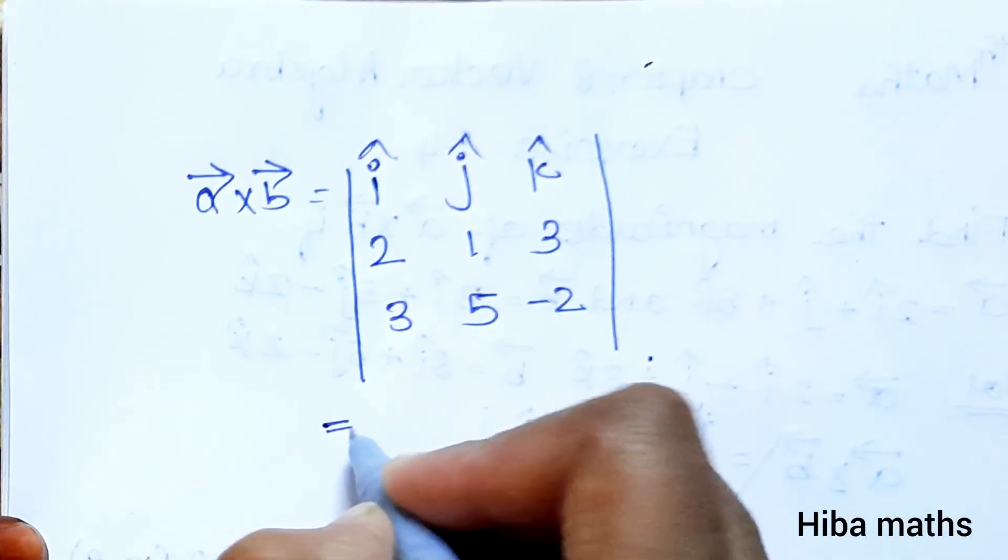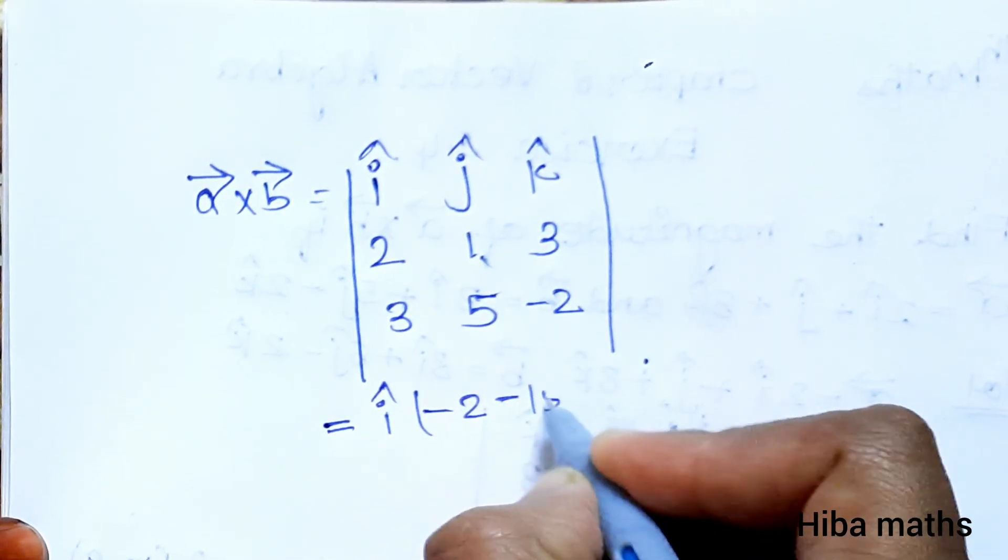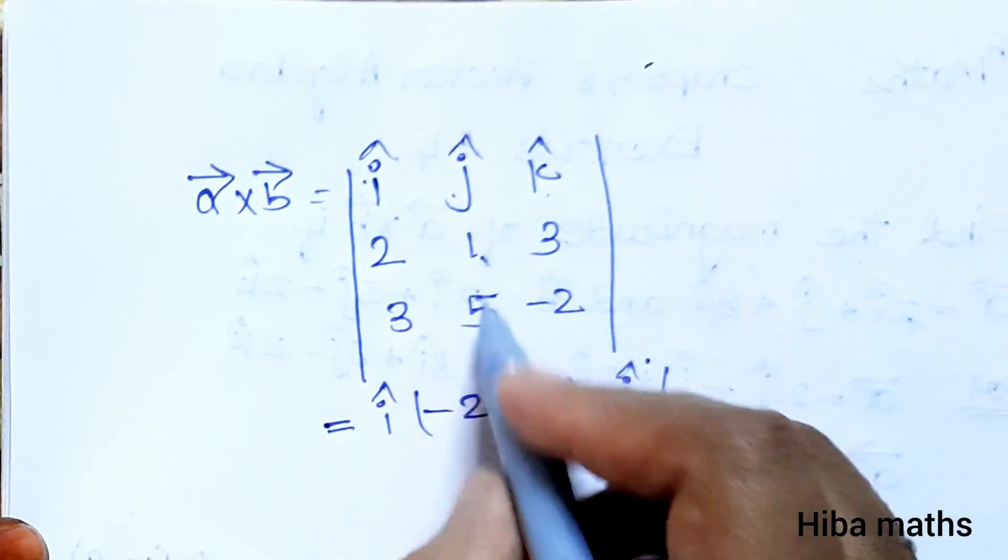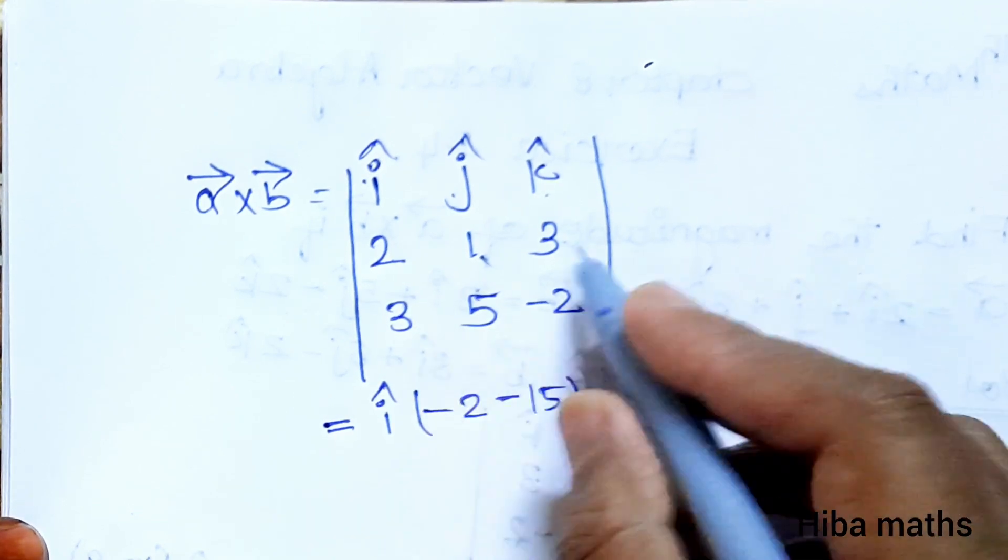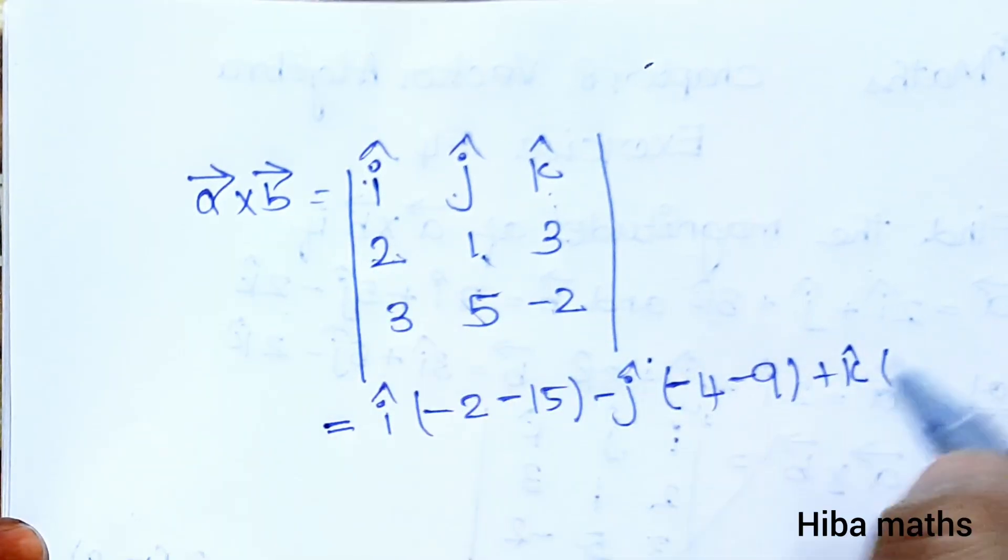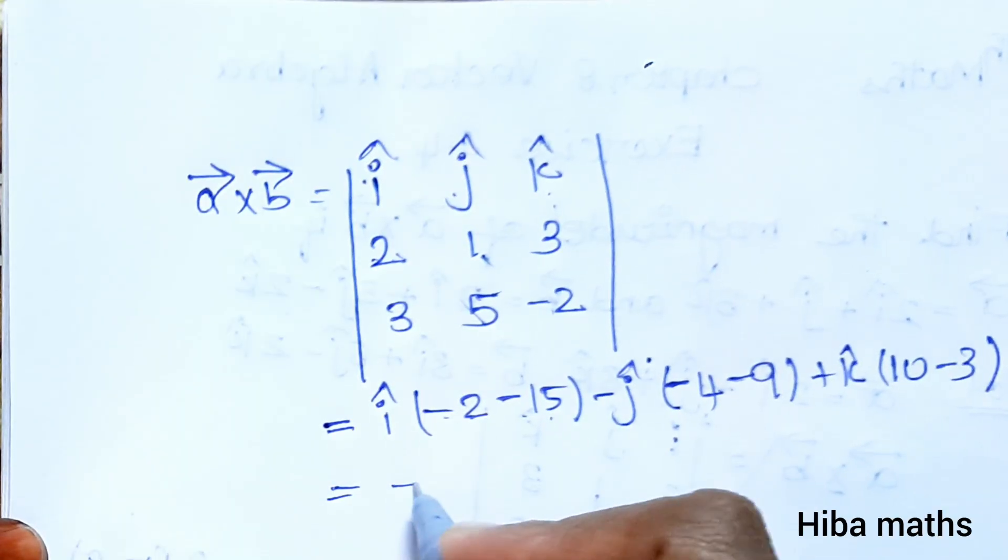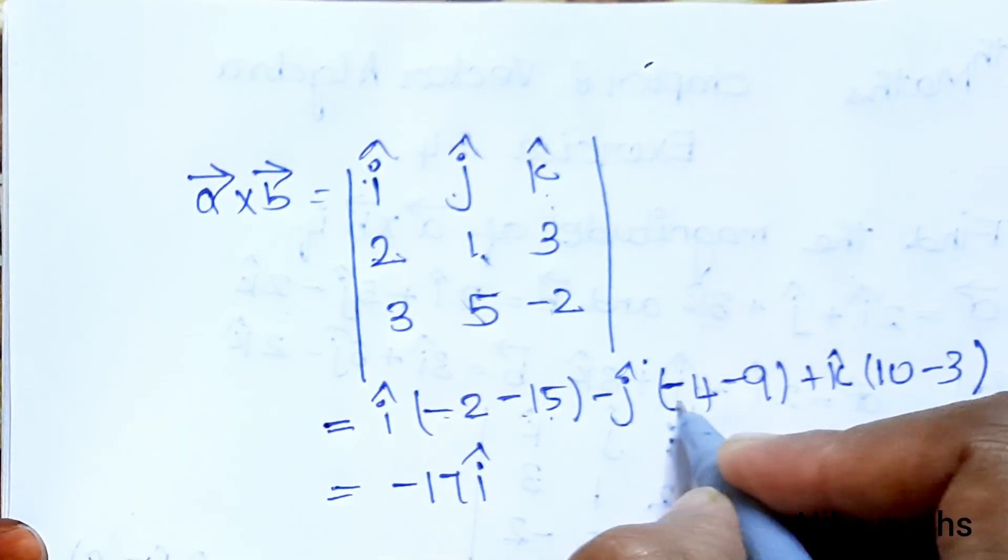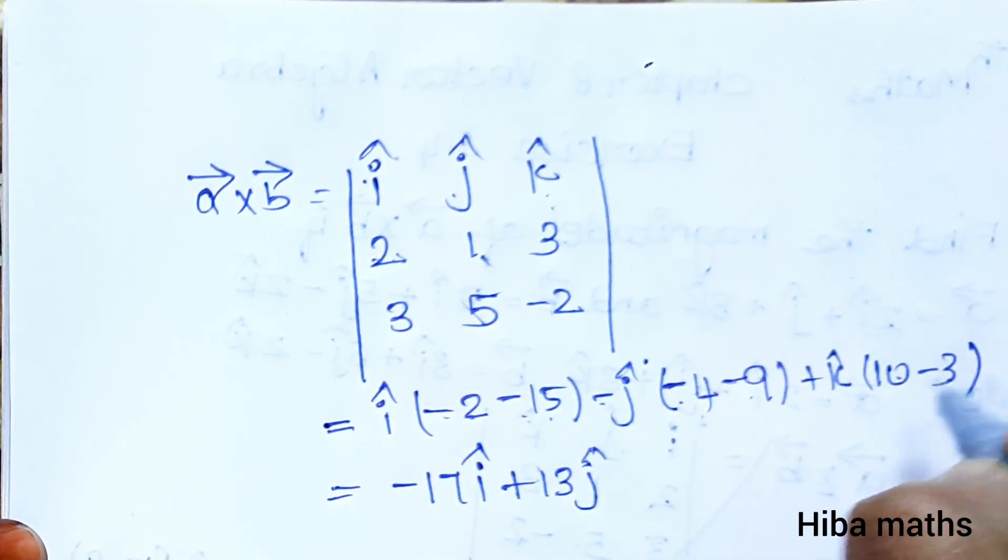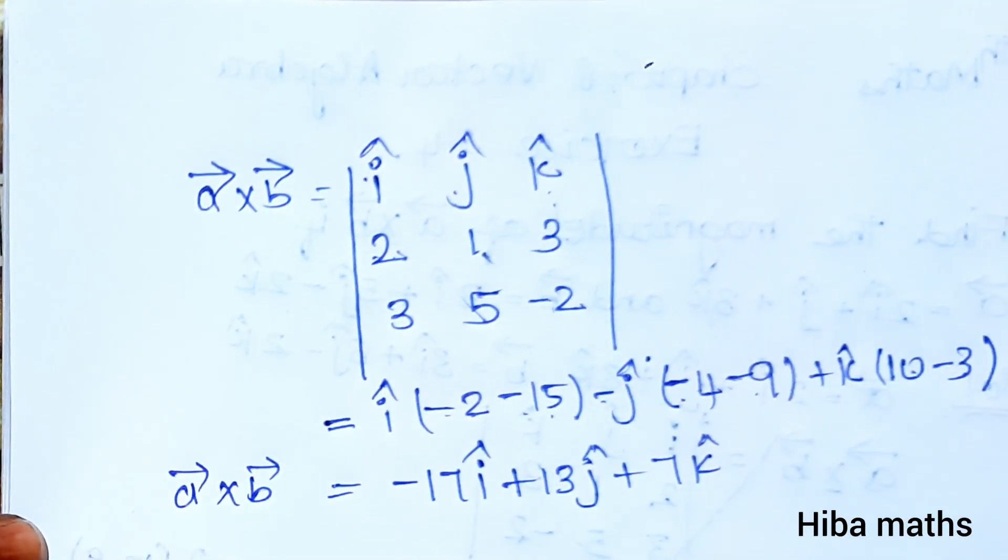Solving in matrix format: i(1×(-2) - 3×5) minus j(2×(-2) - 3×3) plus k(2×5 - 1×3). This gives i(-2 - 15) minus j(-4 - 9) plus k(10 - 3), which equals -17i + 13j + 7k. So A vector cross B vector equals -17i + 13j + 7k.